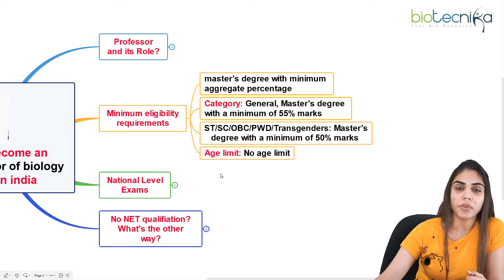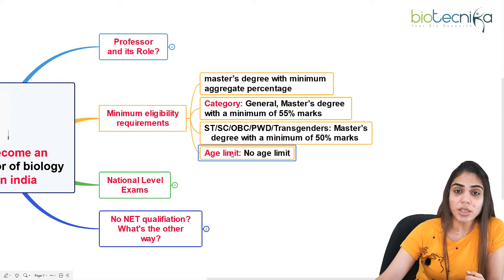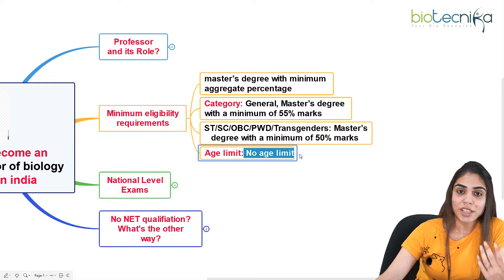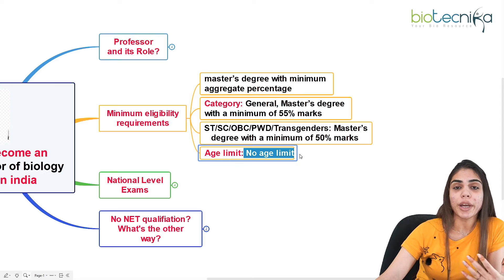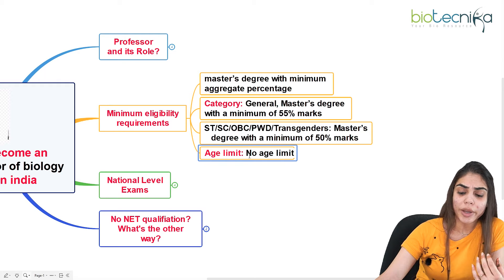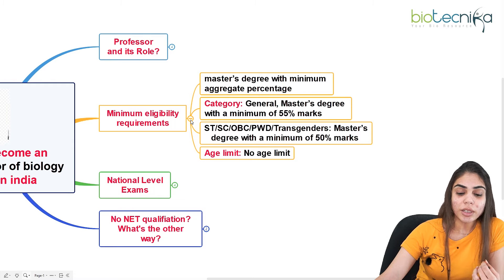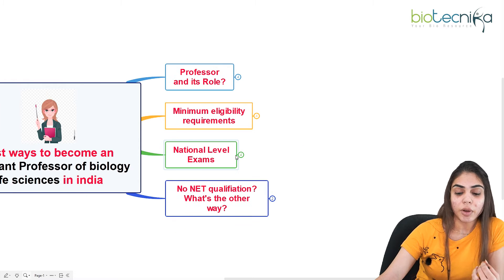Regarding the age limit, there is no age limit to become an assistant professor in India, because experience and other factors are considered more important.